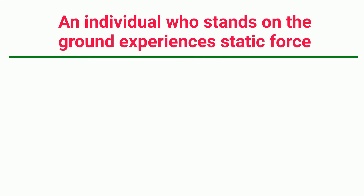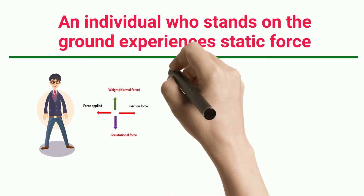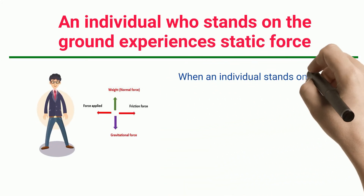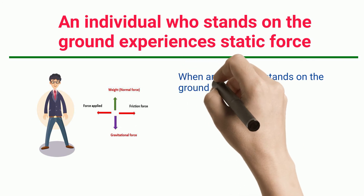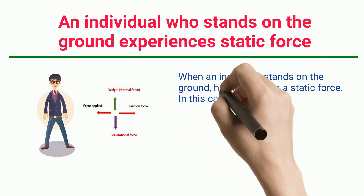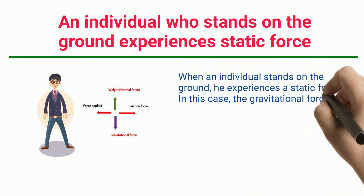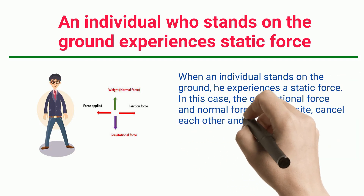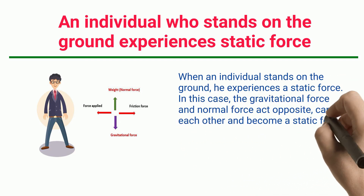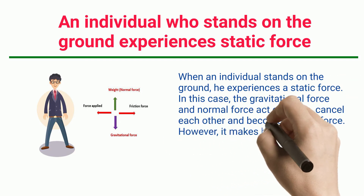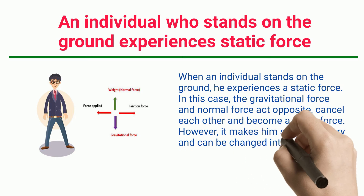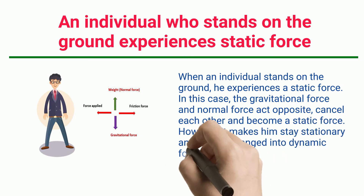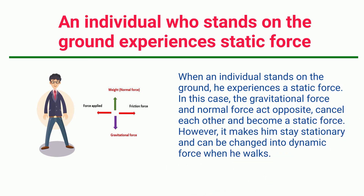When an individual stands on the ground, he experiences a static force. In this case, the gravitational force and normal force act in opposite directions, cancel each other, and become a static force. However, this static force makes him stay stationary and can be changed into dynamic force when he walks.